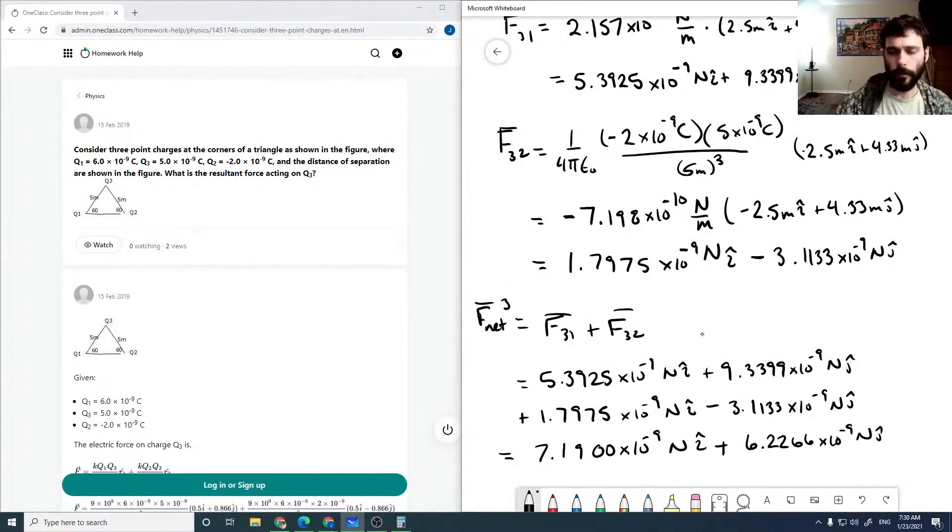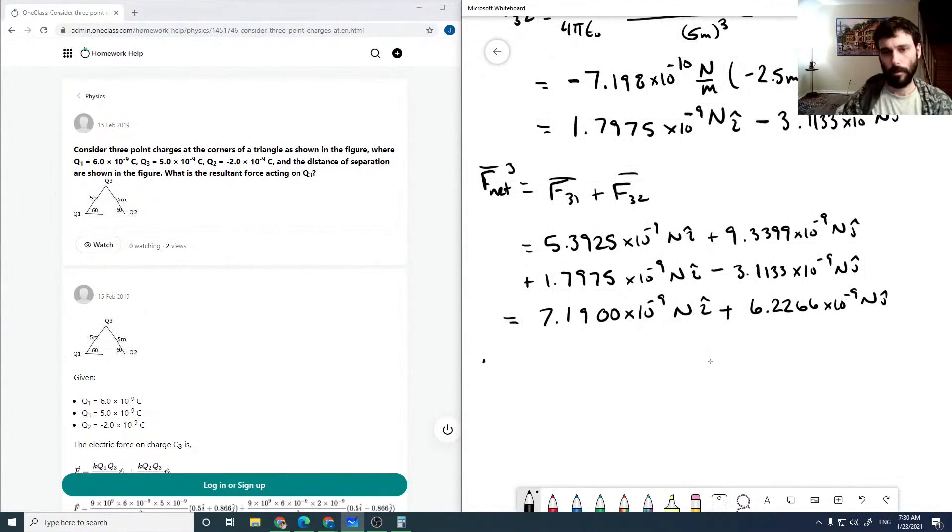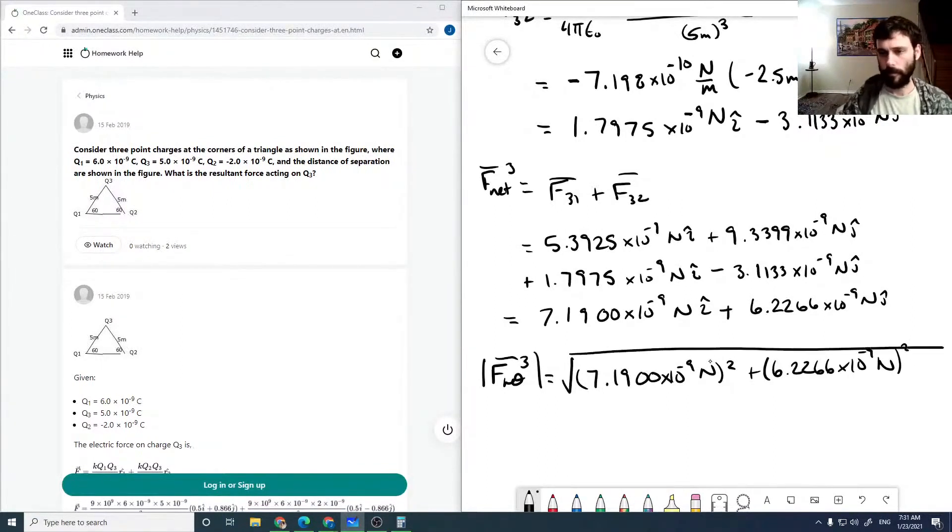If we want the magnitude, that's just the square root of the component squared, which comes out to be 9.51 times 10 to the minus 9 newtons.